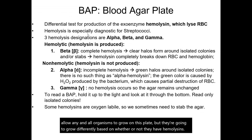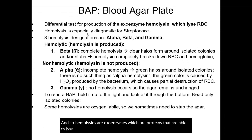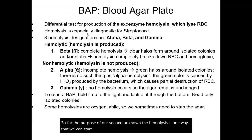Hemolysins are exoenzymes, which are proteins, that are able to lyse or destroy red blood cells. For the purpose of our second unknown, hemolysis is one way that we can start to differentiate our six different Streptococci organisms.